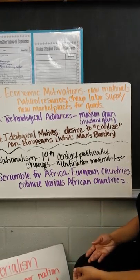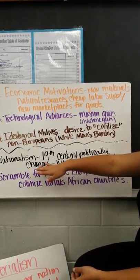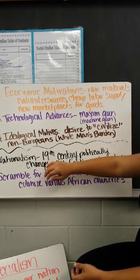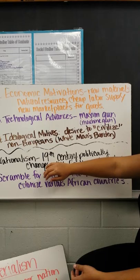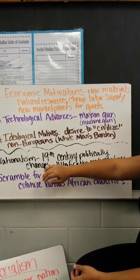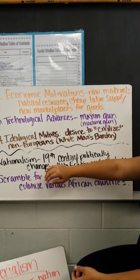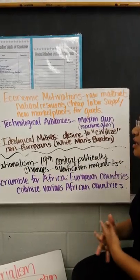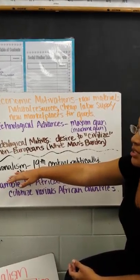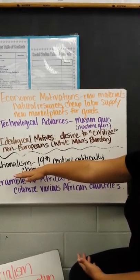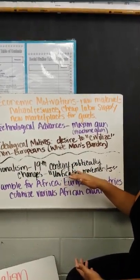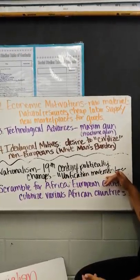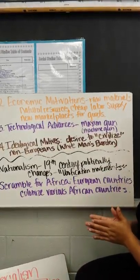But in reality, Africans already had their own sense of government. During this time, you're going to have different ethnic groups join together with a love for their culture and a love for their nation. That's where you get nationalism, which is going to be a problem that leads up to World War I. Nationalism is basically a 19th century — meaning the 1800s — political change. You're going to have unification movements, where people of the same cultures join together and become one.